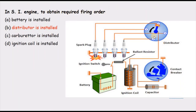The next question is: in an SI engine, what is installed to obtain the required firing order? The secondary of the ignition coil produces the high voltage of around 20,000 volts and above. It goes to the distributor rotor, and as the rotor rotates and makes contact with each point of the distributor cap, each spark plug fires in sequence — giving a firing order of 1-3-4-2. The distributor rotor and distributor cap ensure the required firing order.